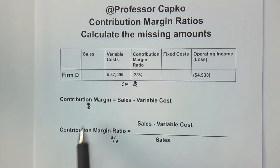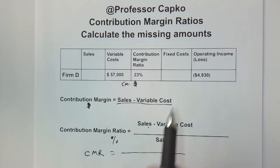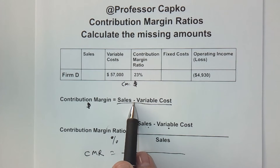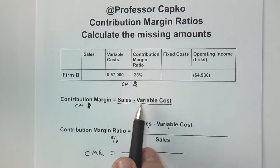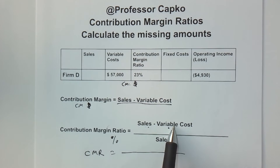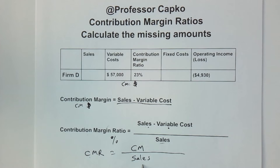The first thing to look at is the contribution margin ratio formula — I'll abbreviate that as CMR. We know CMR is equal to sales minus variable costs, all over sales. The numerator, sales minus variable costs, is the same as contribution margin. So I can substitute in: contribution margin ratio equals contribution margin divided by sales. I've just combined those two formulas to get there.